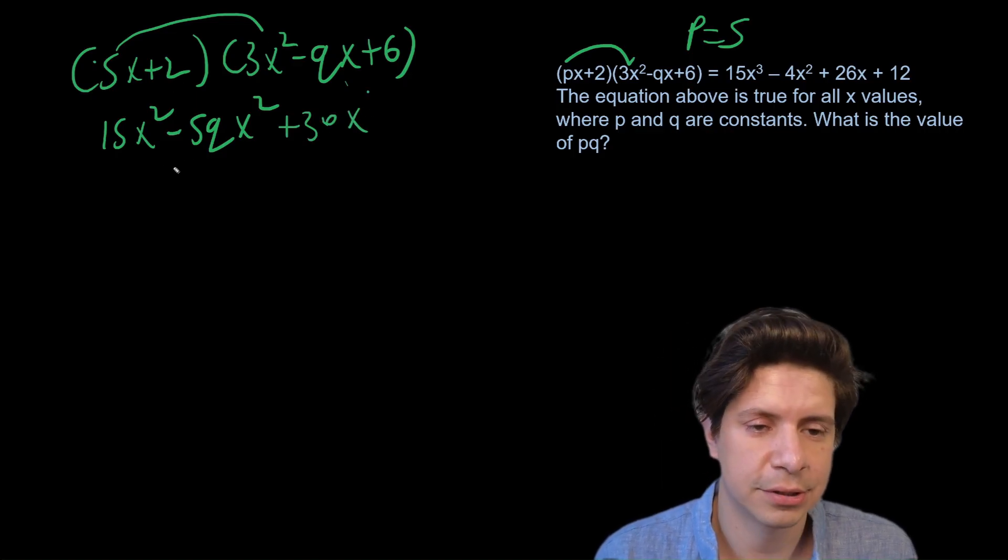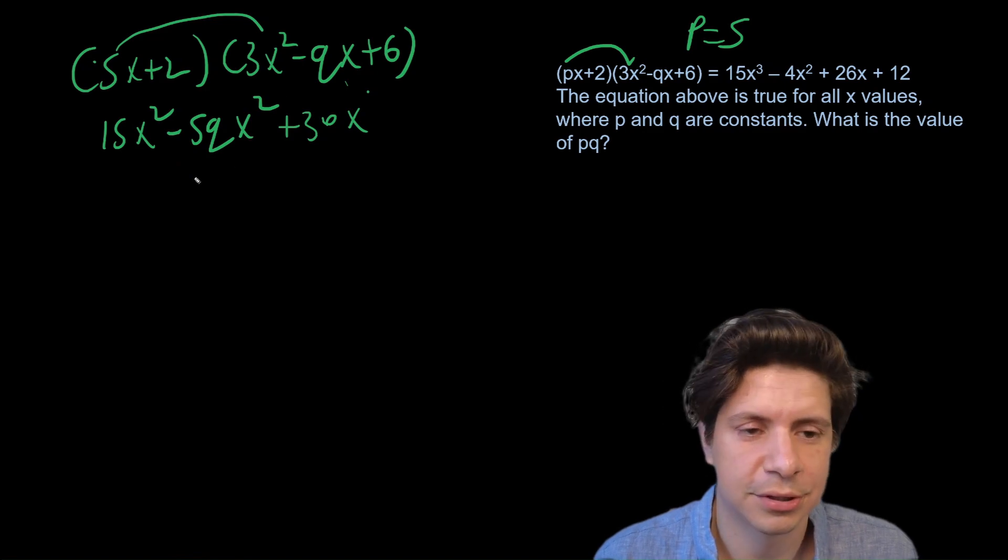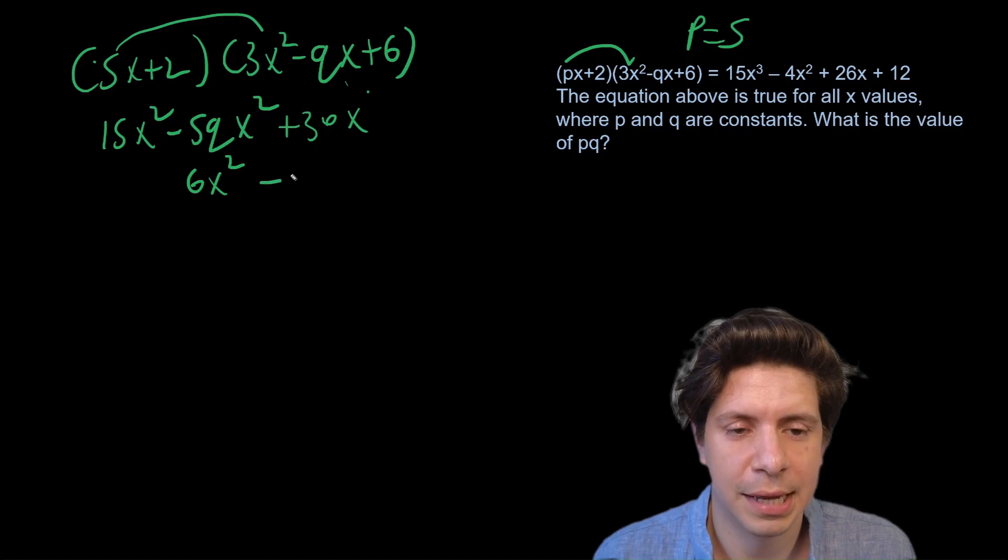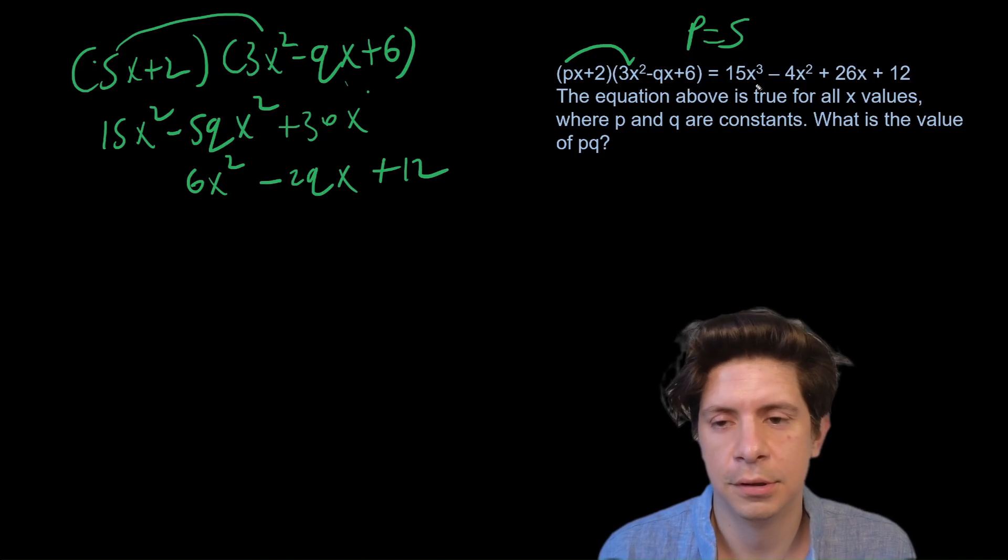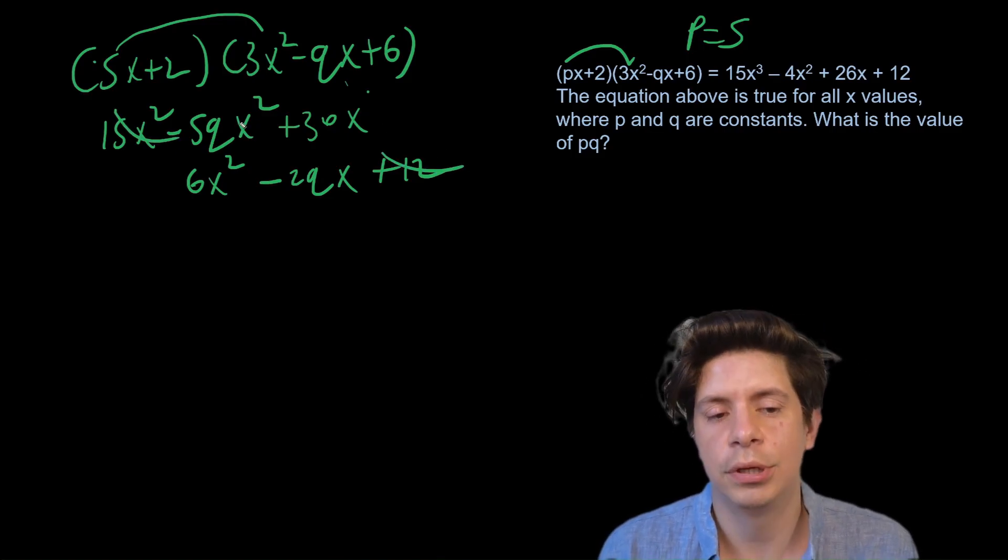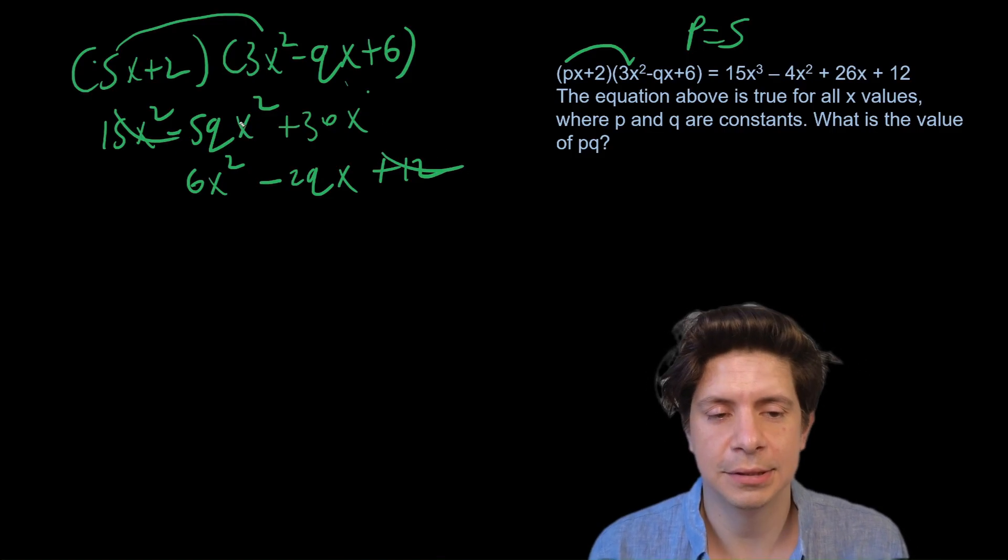Then we'll do 2 times 3x², so that's going to be 6x². 2 times -qx will become -2qx, and 2 times 6 is 12, which we got there. So those are already clean.